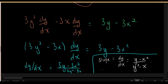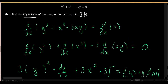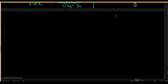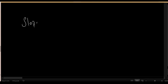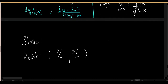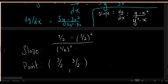Now recall what the question actually asked: the equation of the tangent line at the point (3/2, 3/2). To find the equation of a line we need its slope and a point. We have the point. For the slope, plug x equals 3/2 and y equals 3/2 into the slope formula: the numerator is 3/2 minus (3/2) squared and the denominator is (3/2) squared minus 3/2. The numerator and denominator are exactly opposites of each other, so the slope reduces to negative 1.